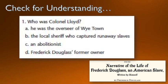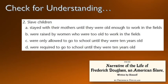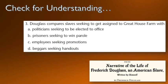First question: who was Colonel Lloyd? Colonel Lloyd was Frederick Douglass's former owner, and Douglass believed that Colonel Lloyd was also his father. Next: complete the sentence — 'Slave children...' Slave children were raised by women who were too old to work in the fields; their own mothers were taken from them as soon as possible and sent back to work. Next: Frederick Douglass compares slaves seeking to be assigned to the Great House Farm with politicians campaigning — it was such a privilege that slaves would actively campaign to get it.